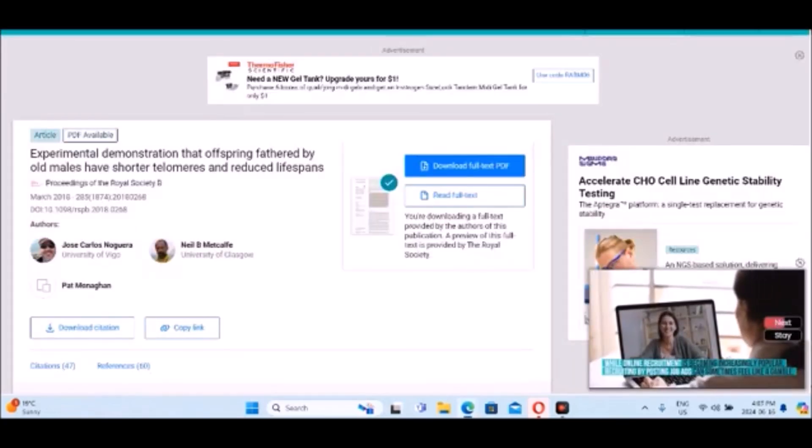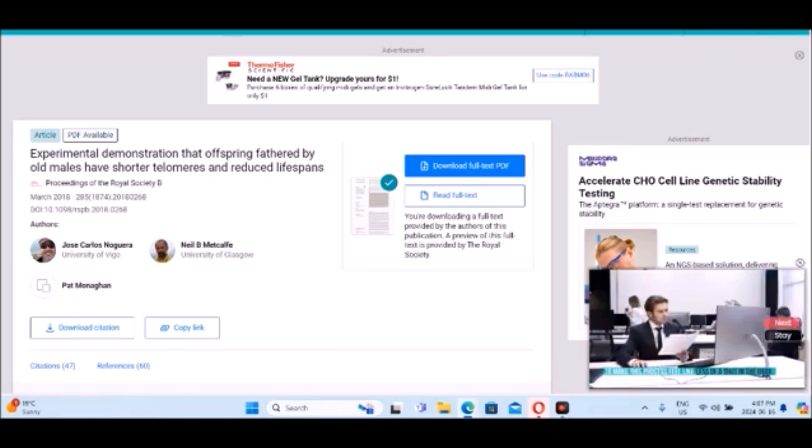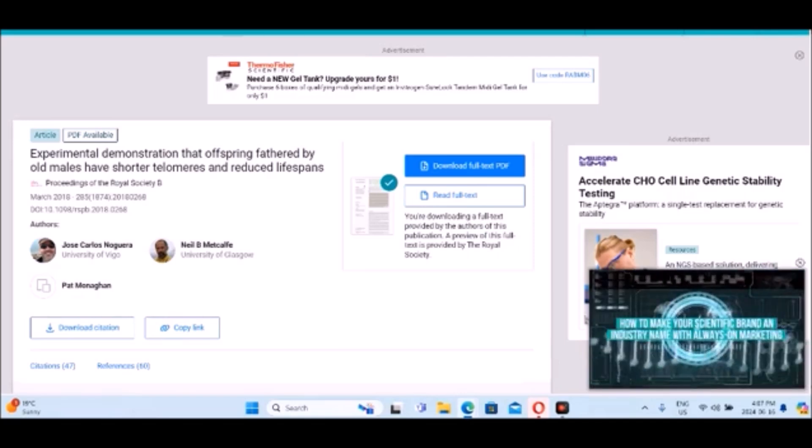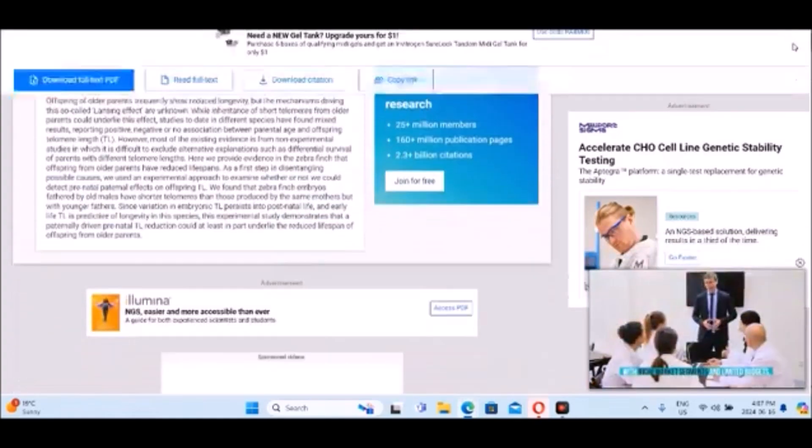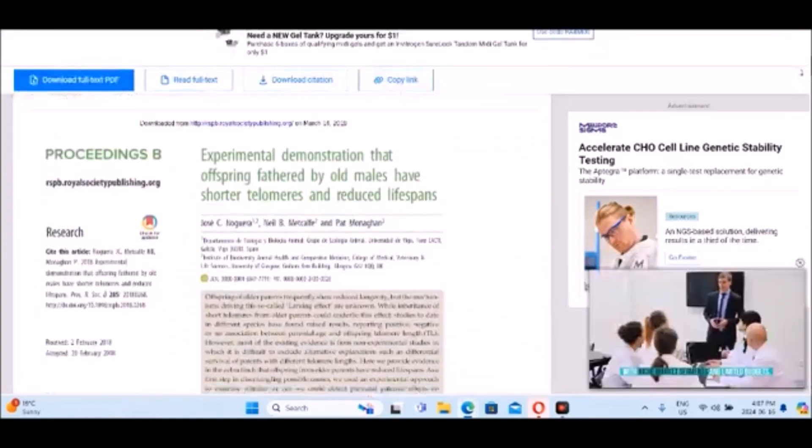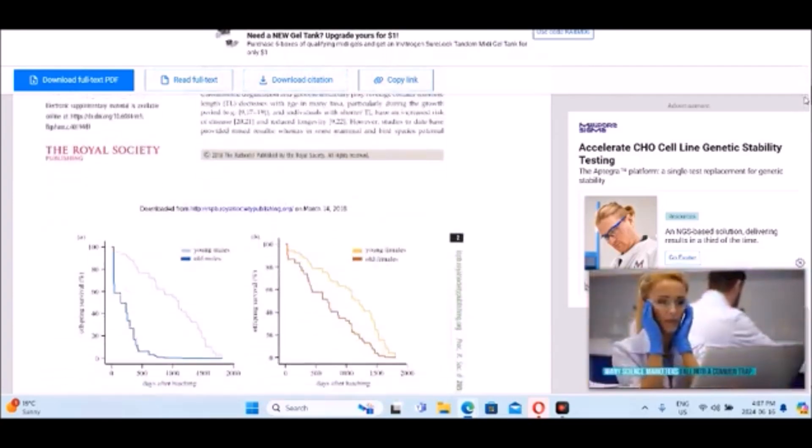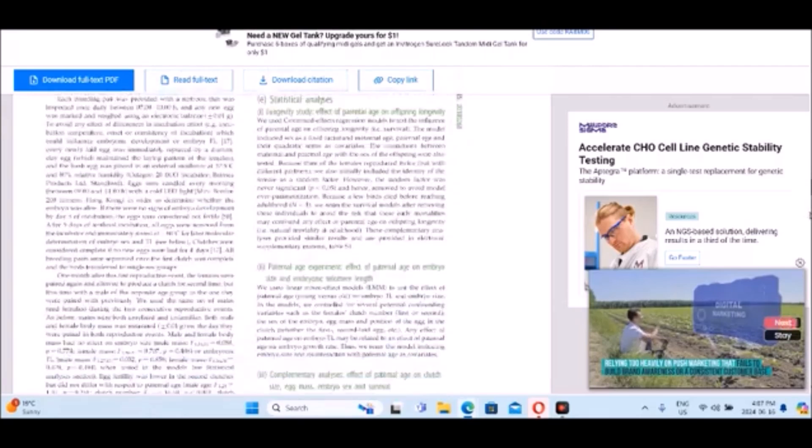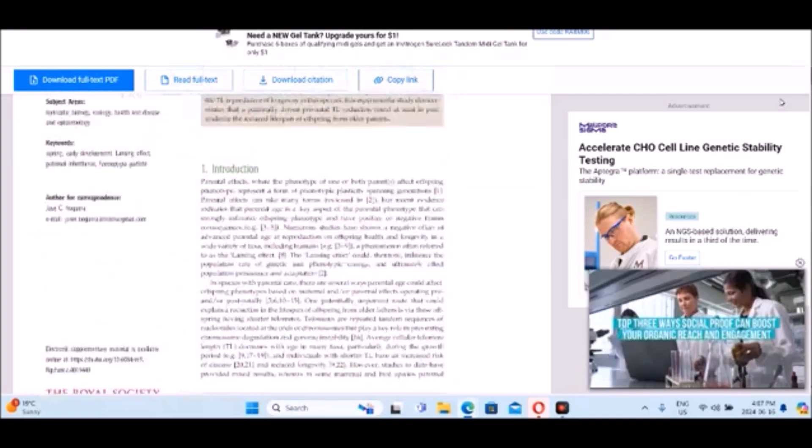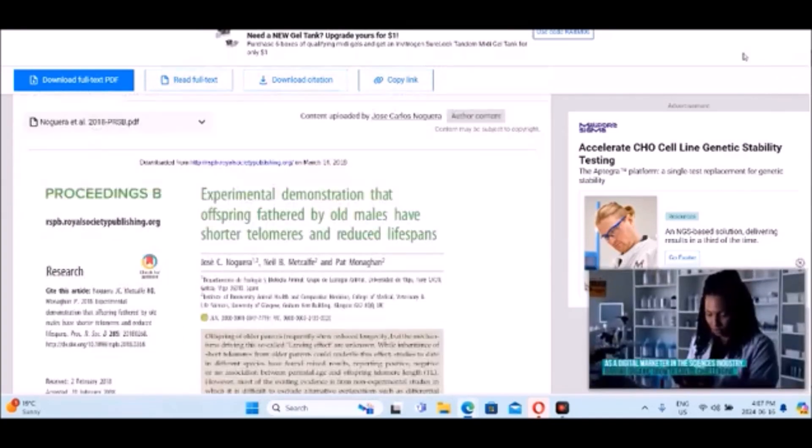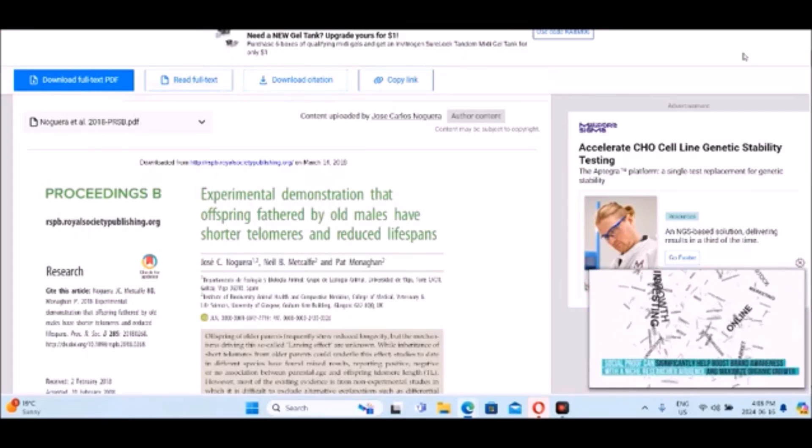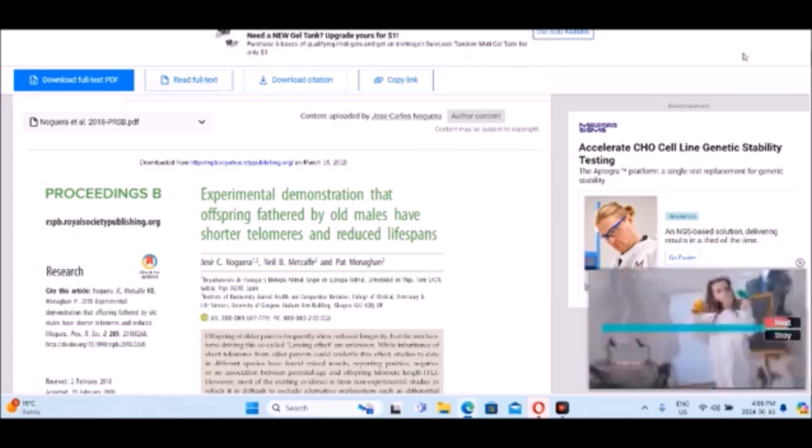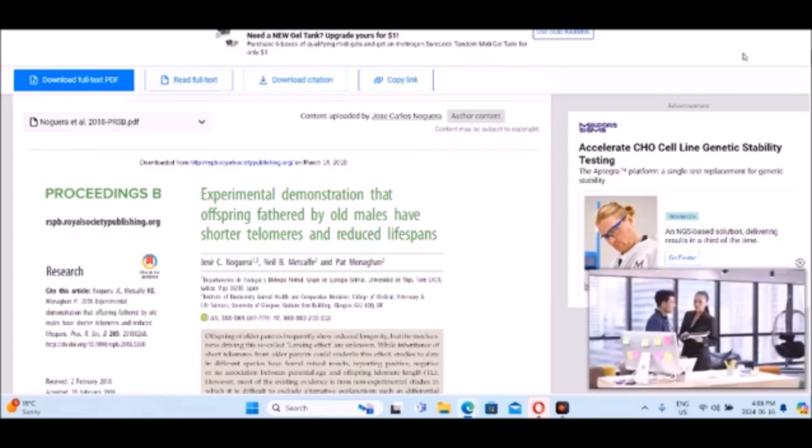There's also a research paper from 2018. It was an experimental demonstration that offspring fathered by old males have shorter telomeres and reduced lifespans. They studied this in animals primarily, they weren't really sure if it also correlated to humans. But I think that's just something to keep in mind as well. I'll leave this article in the description. I just thought it was interesting and disturbing. It makes sense, like the more genetic defects that one has would increase your risk of having a reduced quality of life, reduced overall life, I'd assume.